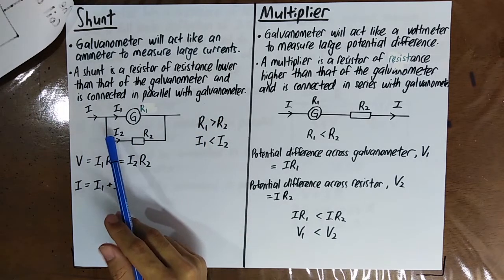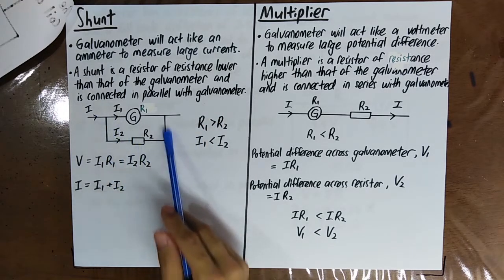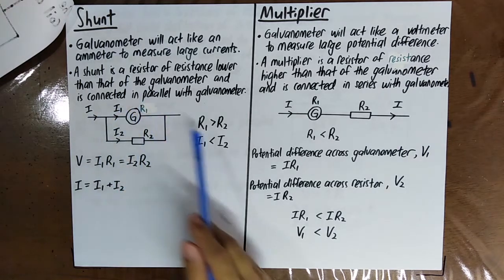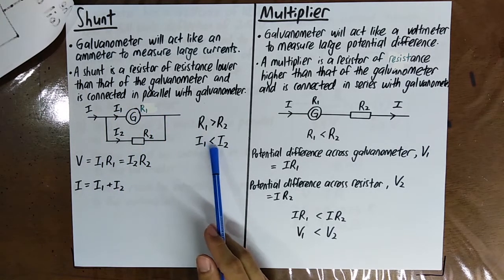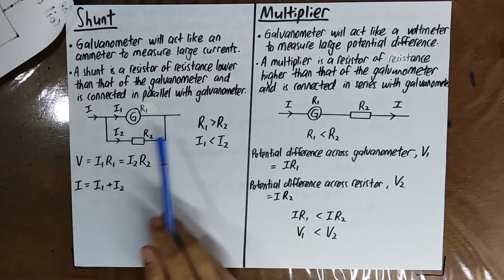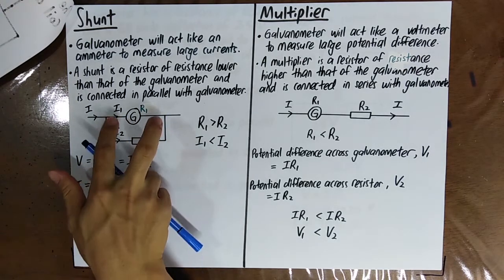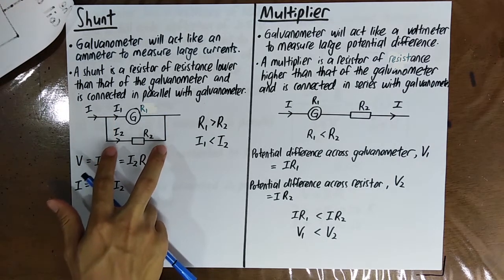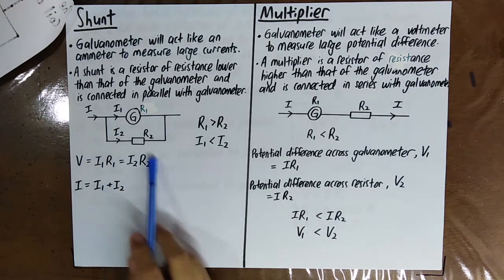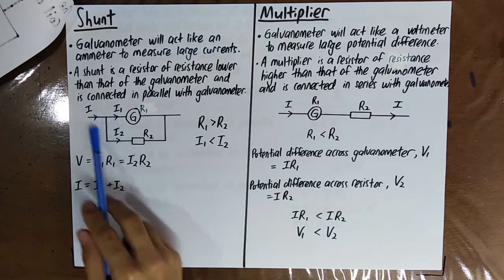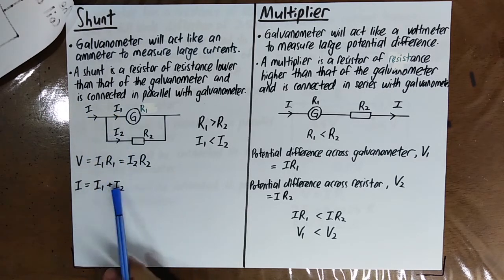So the current that flows through the shunt will be higher than the current through the galvanometer, i.e., I2 is greater than I1. Since they are connected in parallel, the potential difference across here is the same as across here, so you can get the equation from that. Then by using Kirchhoff's first law, you know that I equals I1 plus I2.